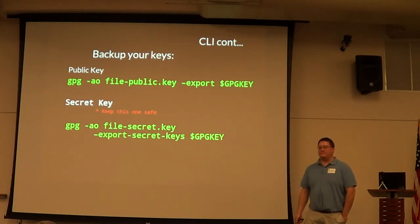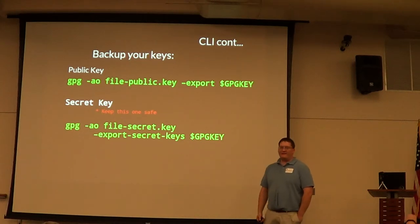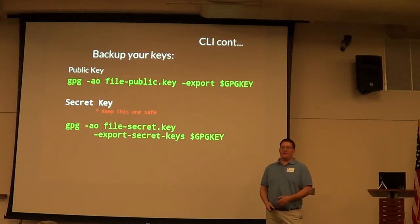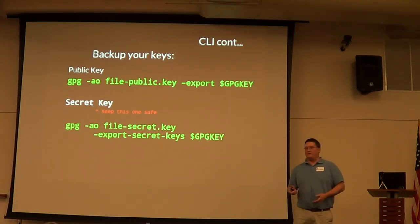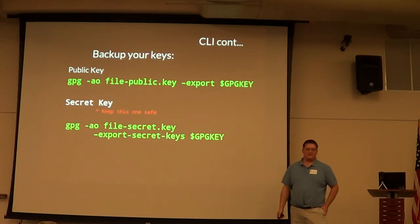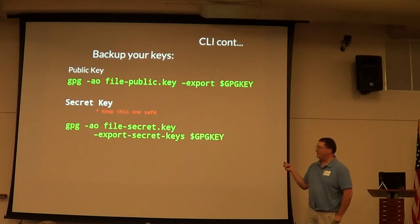With everybody in the world using this and only eight characters, how many clashes are there? The eight-character key ID at the end is basically just for what's on your system — it's the last bit of the key fingerprint, a short fingerprint of it. There are collisions on that, and you should never use it to identify anything definitively. Because there can be clashes, it's best to identify by the full fingerprint, which I'll show in a bit. It's kind of like MAC addresses — you read out the last little bit for convenience.